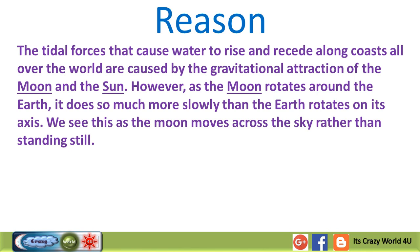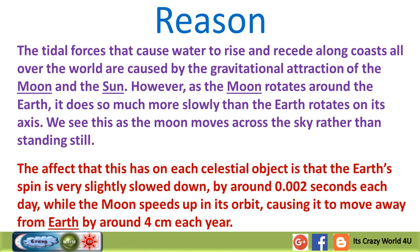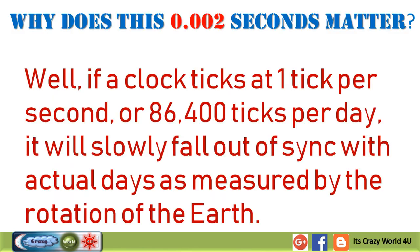The tidal forces that cause water to rise and recede along coasts worldwide are caused by the gravitational attraction of the Moon and the Sun. As the Moon rotates around the Earth, it does so much more slowly than the Earth rotates on its axis — we see this as the Moon moving across the sky. The effect is that Earth's spin is very slightly slowed down by around 0.002 seconds each day, while the Moon speeds up in its orbit, causing it to move away from Earth by around 4 cm each year.